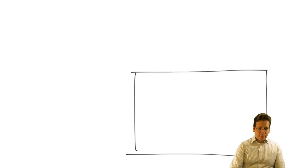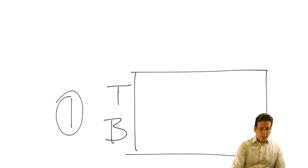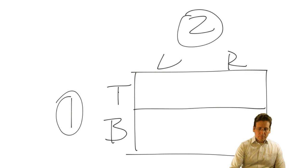So far we have described games using the normal form or matrix form. What that means is we show in a matrix the strategies, the choices that the players can make — maybe top and bottom for player 1, and for player 2, maybe left and right — and then for each combination of choices, like top left, we show the payoffs for those two players.